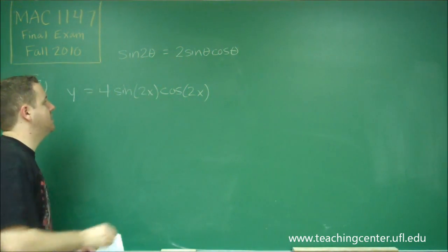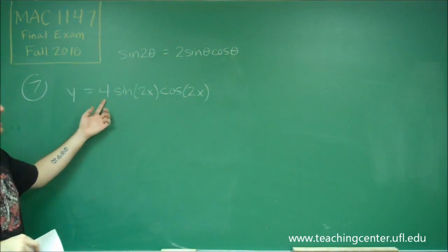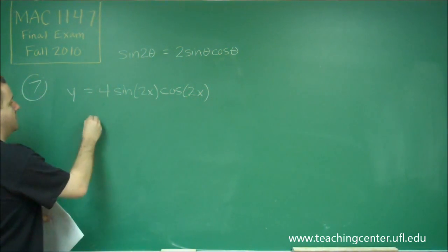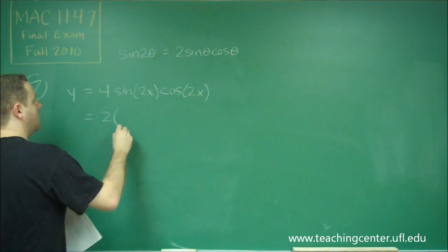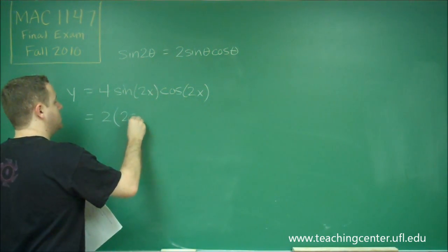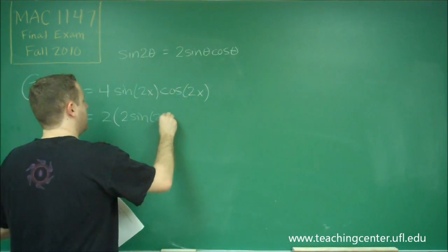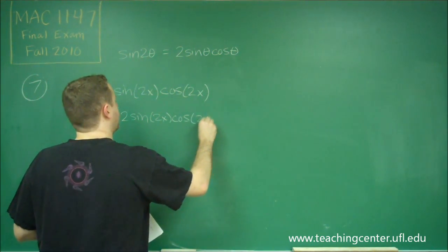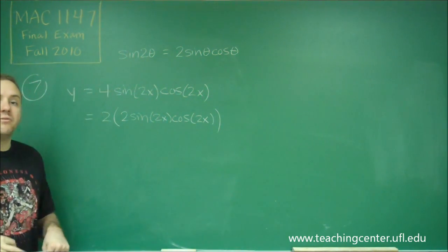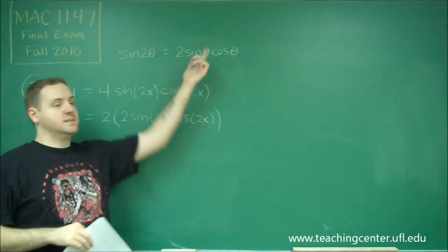So you can see here, this does match this. We just have a 4 instead of a 2, so we have an extra 2 in front. And 2 sine of 2x cosine of 2x then is following that formula where 2x is our theta.